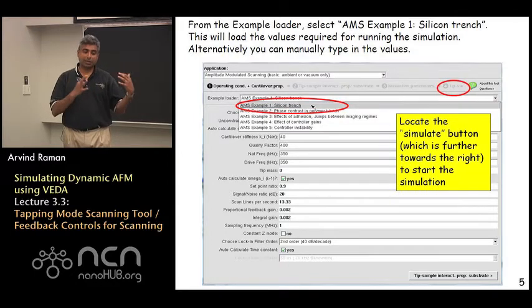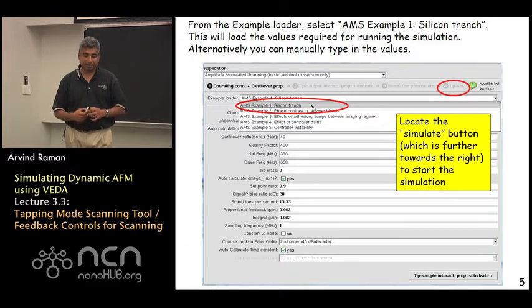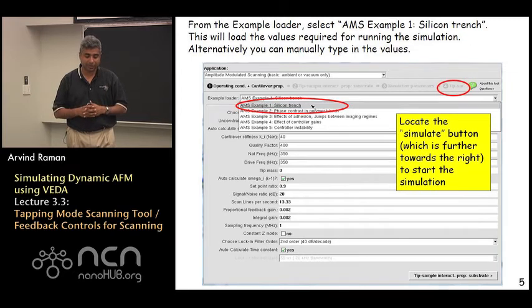So you can not only specify the substrate properties but feature properties can be done separately. In the feature properties you can choose a trench with negative height and choose all the properties and parameters in there.